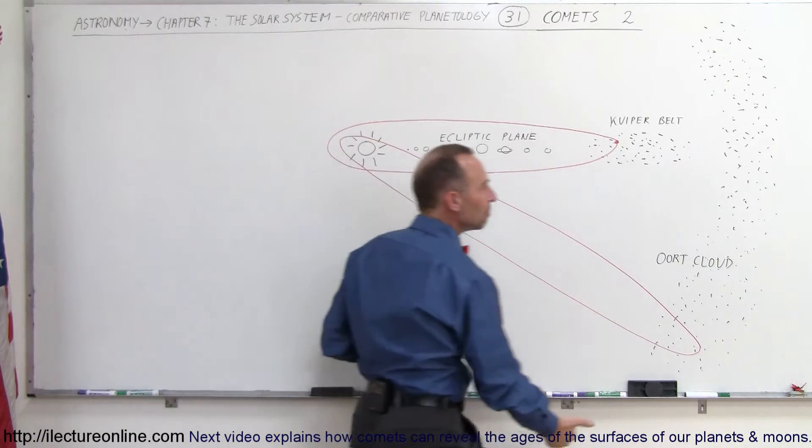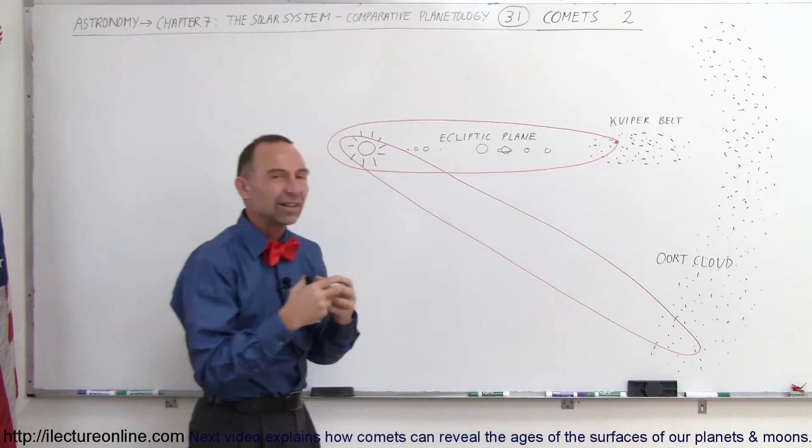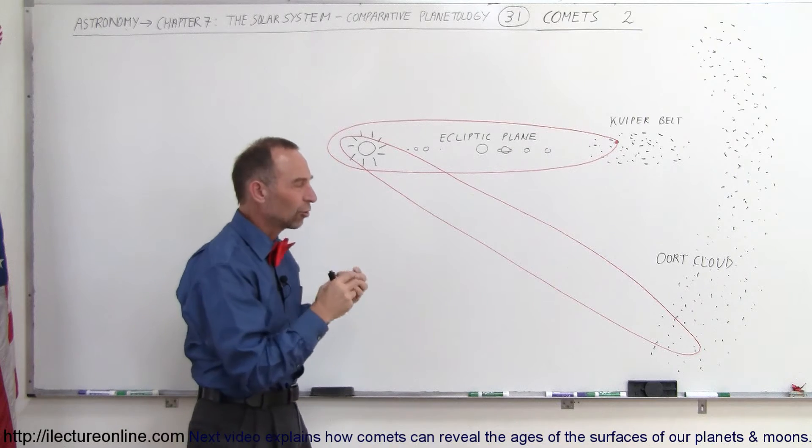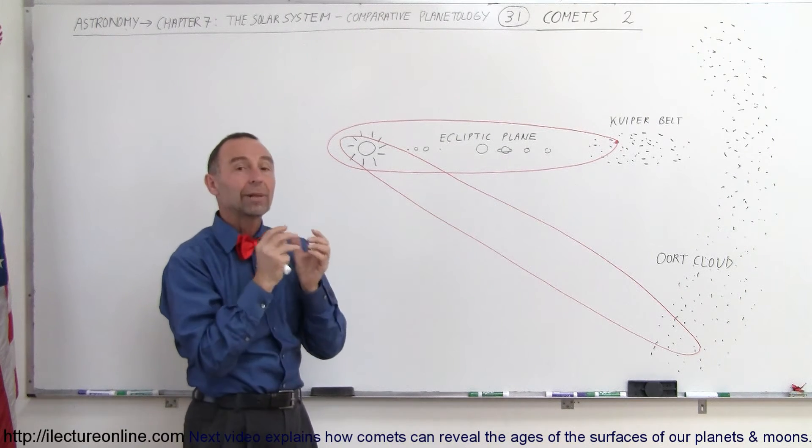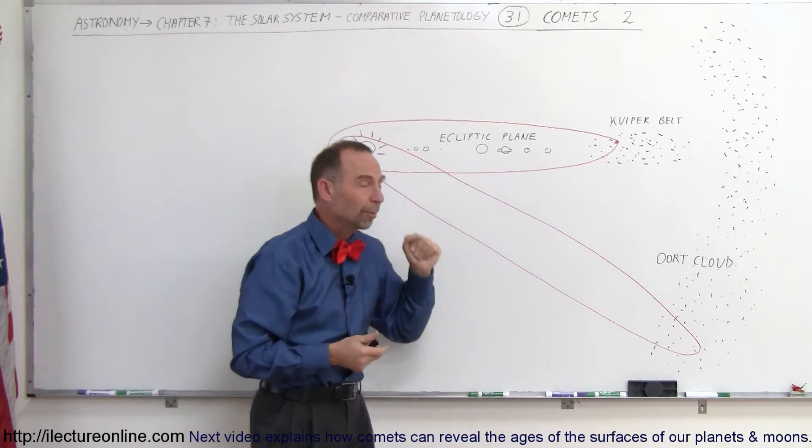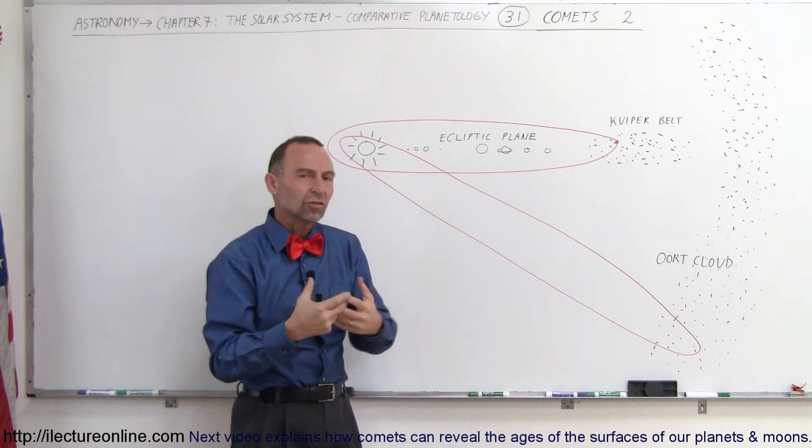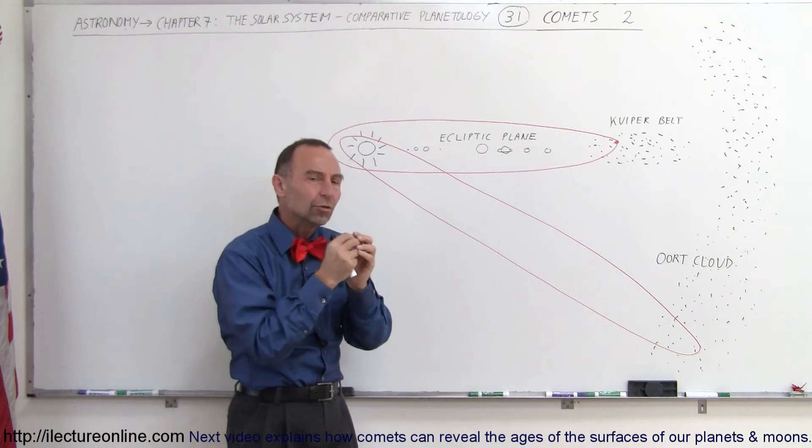And it's again filled with billions and billions of ice rocks and other rocks that's mixed in, leftover material from the formation of the Solar System that coalesce into small, tiny planetesimals. Well, they're not really planetesimals because planetesimals turn into the planets, but they're kind of like it.